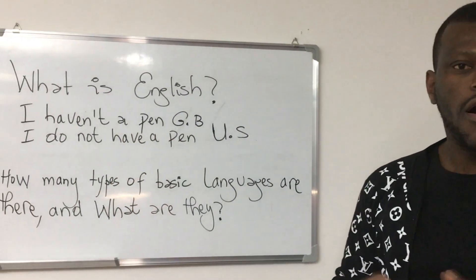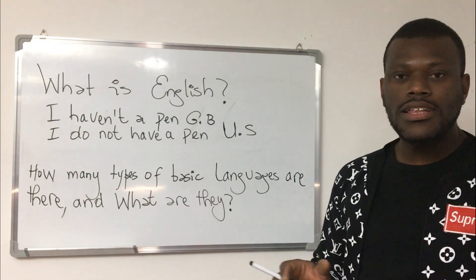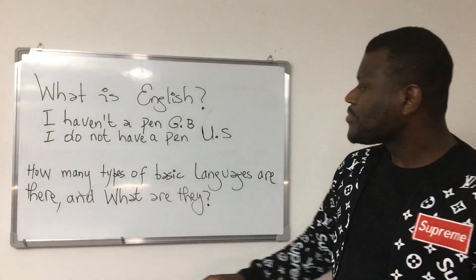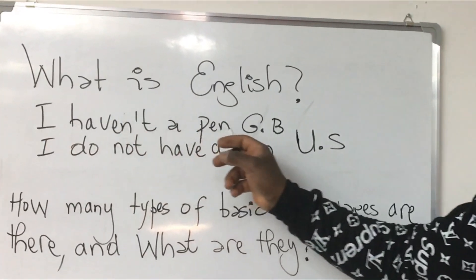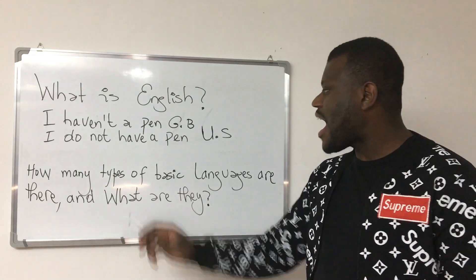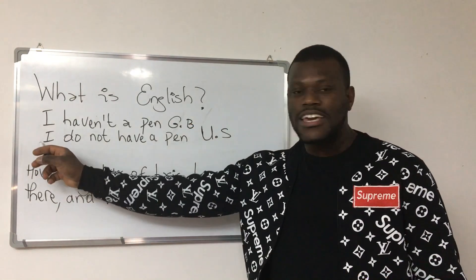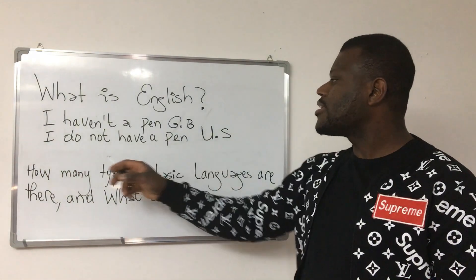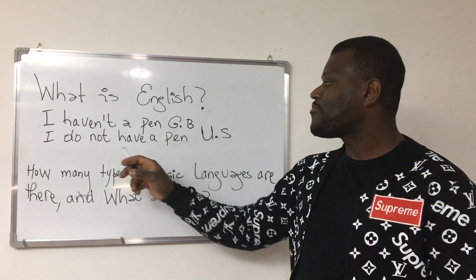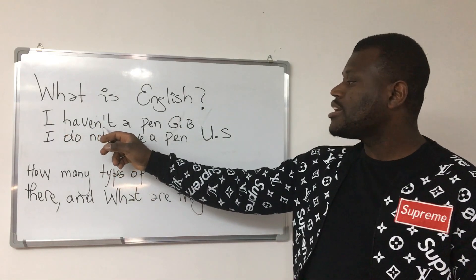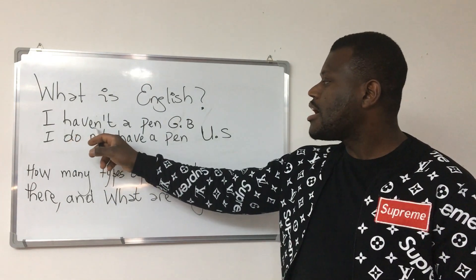We have two examples to see the difference between American English and British English. In British English we say: 'I haven't got a pen.' In American English we say: 'I do not have a pen.'